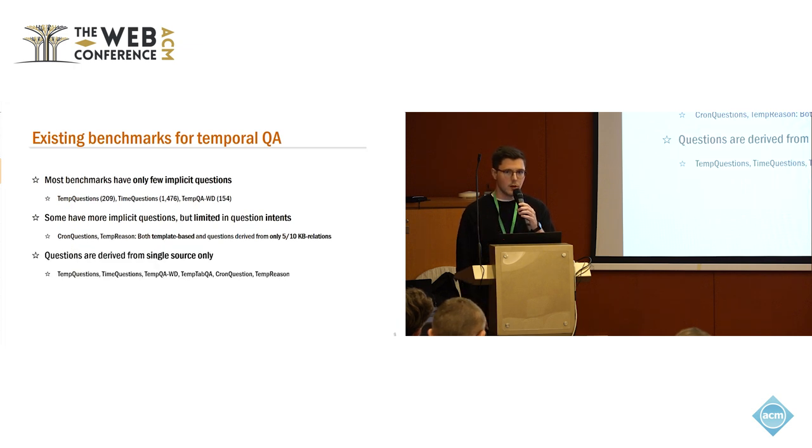On the other hand, the questions in existing benchmarks are derived from a single source. There are benchmarks for question answering over knowledge bases, and then it's typically ensured that all questions are answerable using exactly this knowledge base. On the other hand, there are benchmarks that come from info boxes from Wikipedia, and then again it's assured that all questions are answerable using these sources. And that's actually the case for all of the benchmarks out there, which is also limiting.